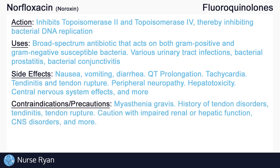What are some of the contraindications and precautions? Fluoroquinolones should be avoided in those with myasthenia gravis, as fluoroquinolones may exacerbate muscle weakness in this population. Also avoid fluoroquinolones in those who have a history of tendon disorders or those who have experienced tendonitis or tendon rupture. Patients who are above 60 years old, patients taking corticosteroids, and patients with heart, kidney, or lung transplants have an increased risk for tendonitis or tendon rupture. Use cautiously in those with impaired renal or hepatic function, those with CNS disorders, and more.